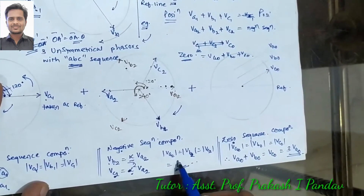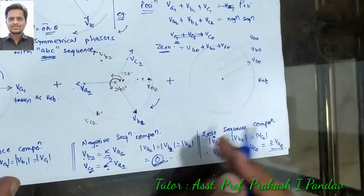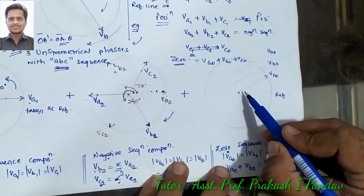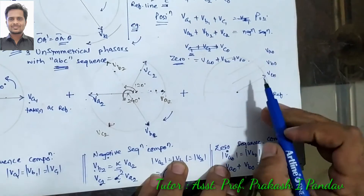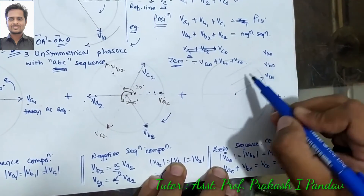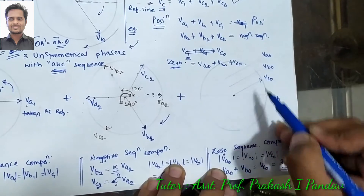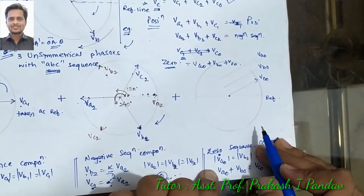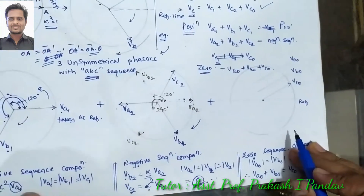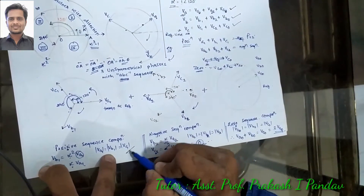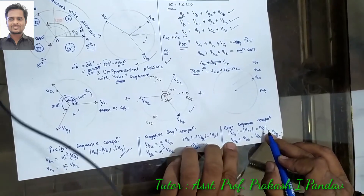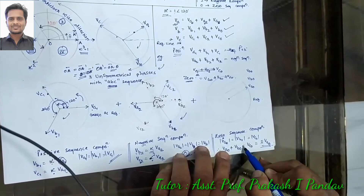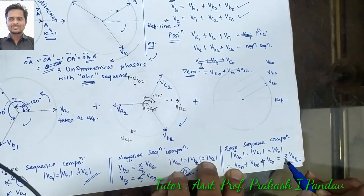For the zero sequence component: what we have learned is that they are the same in magnitude but have zero degree phase shift apart from each other, meaning they are parallel to each other. We know the value and since the phase shift is zero degrees, VA0 plus VB0 plus VC0 equals 3 times any one of the zero sequence components.